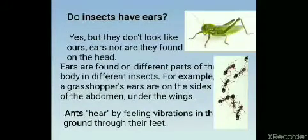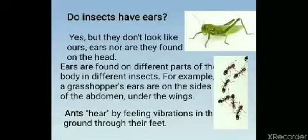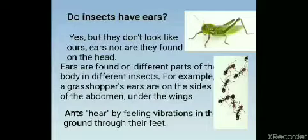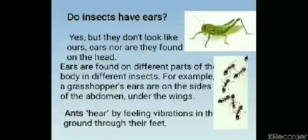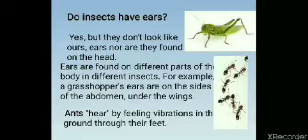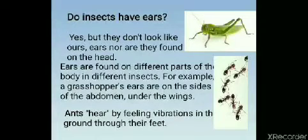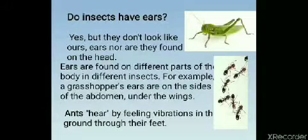Fish pick up sounds in the water through their bodies and their internal ears. Do insects have ears? Yes, but they don't look like ours, nor are they found on the head. Ears are found on different parts of the body in different insects. For example, a grasshopper's ears are on the sides of their abdomen under the wings. Ants hear by feeling vibrations in the ground through their feet.